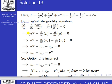Since p = ux and q = uy, we have ∂/∂x of ux = uxx, and ∂/∂y of uy = uyy. Bringing e^(xy) to the right-hand side, we get uxx + uyy = e^(xy). This is the Euler-Ostrogradsky equation for the given functional.